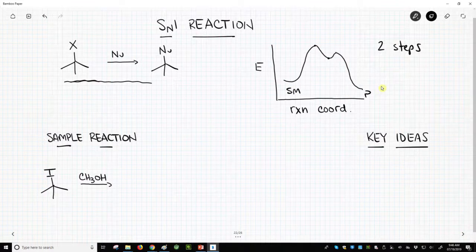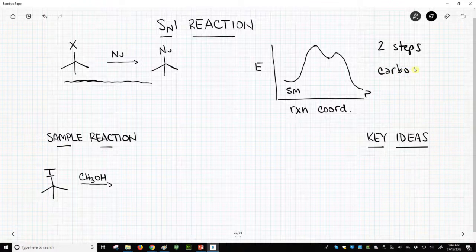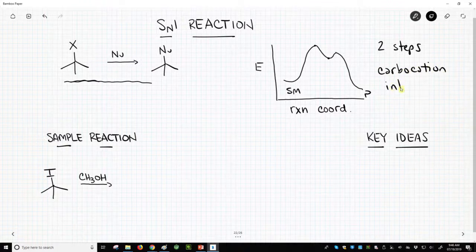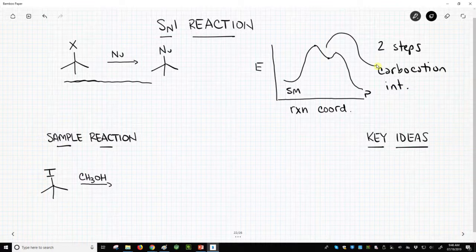So that is a difference. So we have an intermediate, and it's actually going to be a carbocation. That's what our intermediate is, and that is going to live right at that point in this energy curve.